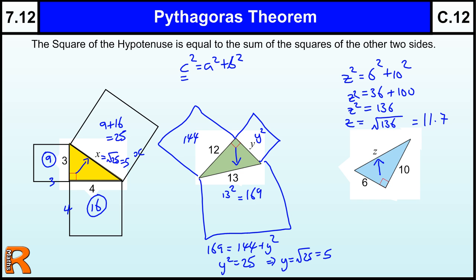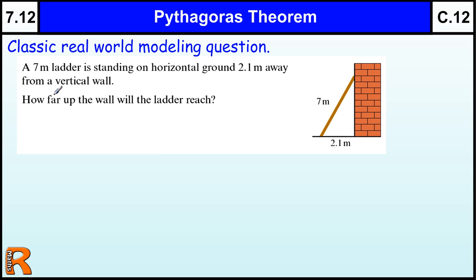Let's have a look at one that is supposed to be a real-world situation. So here's a classic version with a ladder up against a wall, and we're told the ladder is 7 metres long and it's 2.1 metres away from the wall. How far up the wall is the ladder going to reach? Now what we've got to do here is to realise this is just a right-angled triangle. Here is the hypotenuse, here is one side, here is another. So this side, this angle here is a right-angle. So there's our right-angled triangle.